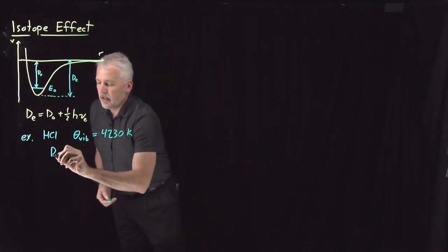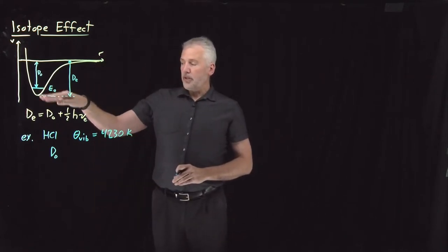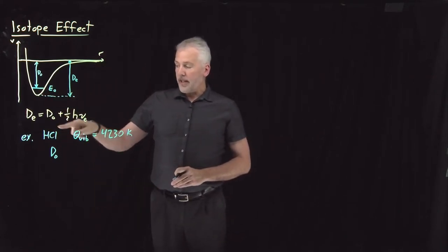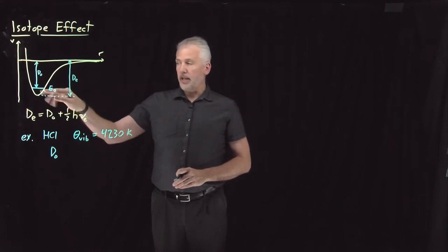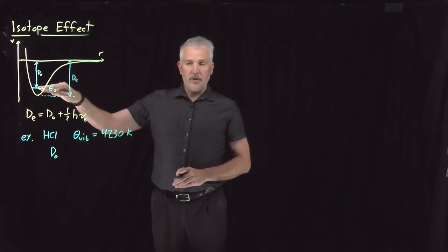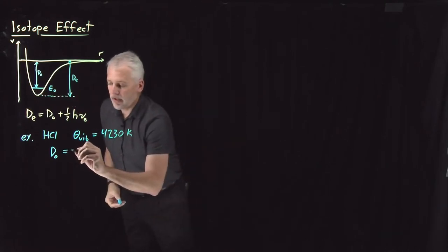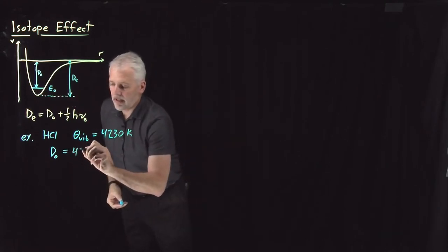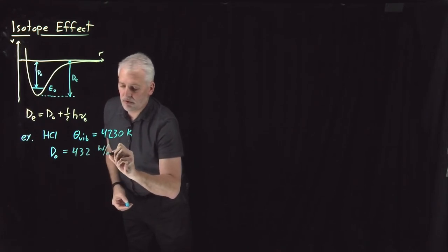From experimental observations, if we dissociate — if we find out how much energy it takes to dissociate the covalent bond in an HCl molecule, dissociating it from the ground state of the molecule — that energy can be measured. And that energy is 432 kilojoules per mole.